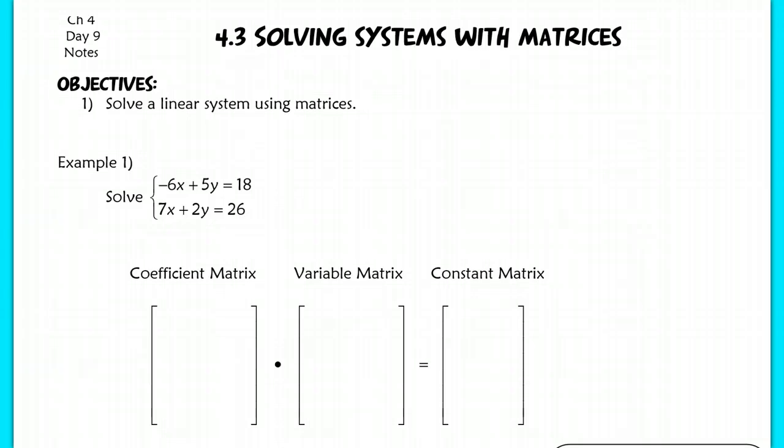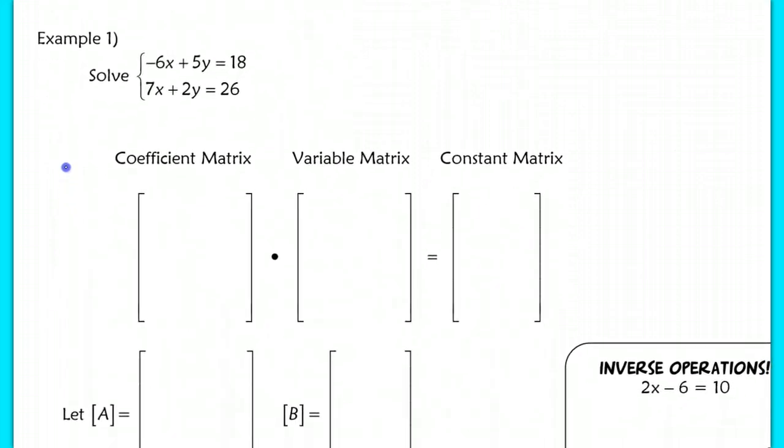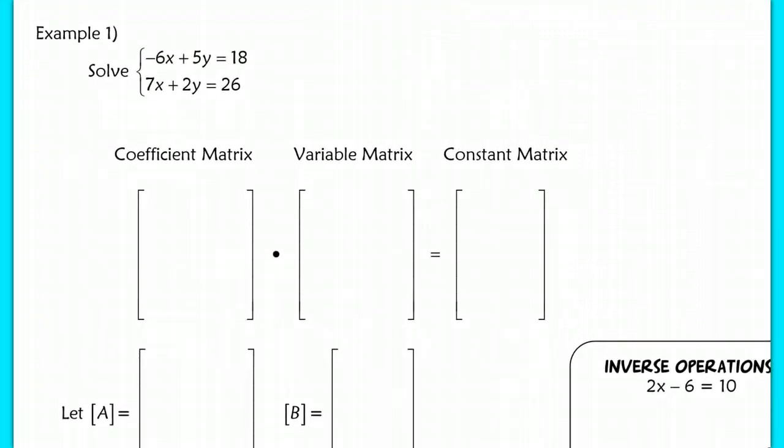So this first example, I'm only using a two-variable system, but what you're going to do is define three different matrices. You have a coefficient matrix, a variable matrix, and a constant matrix.